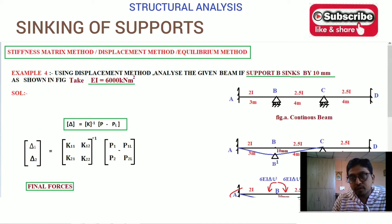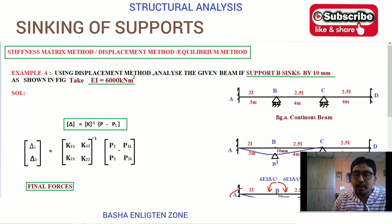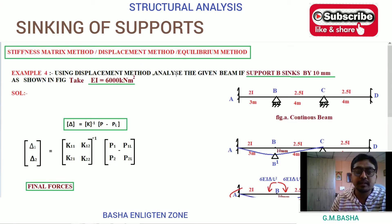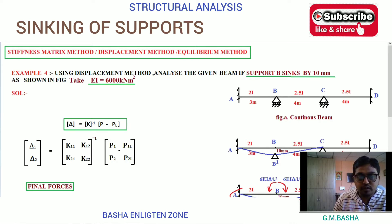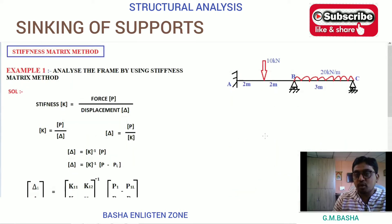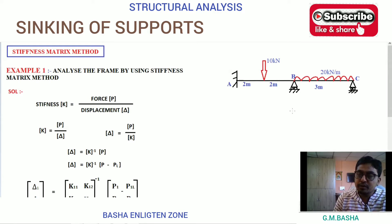Hello friends, welcome to our channel. In this lecture I would like to explain another example based on the stiffness matrix method. The question: using the displacement method, analyze the given beam if support B sinks by 10mm as shown in the figure. Take EI equal to 6000 kilonewton meter square. The basic unknown displacements are two, that is at B and C, so this comes under the 2x2 stiffness matrix.